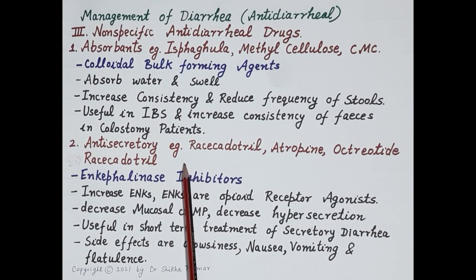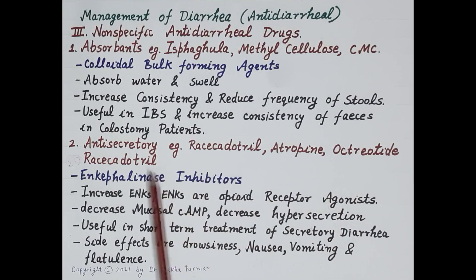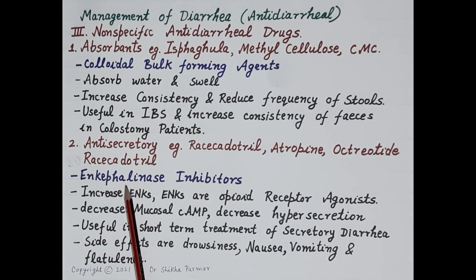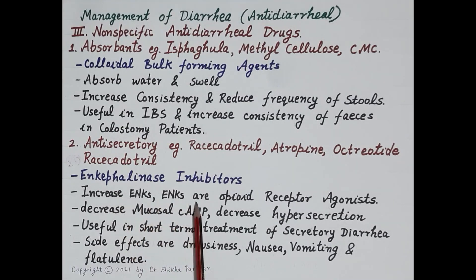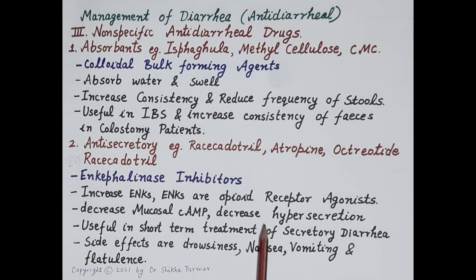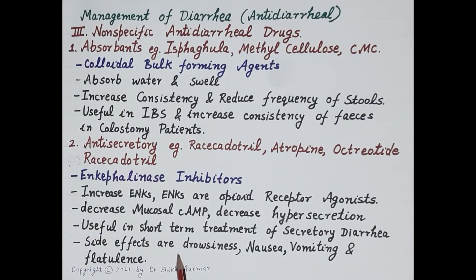Antisecretory drugs include racecadotril, atropine, and octreotide. Racecadotril is an enkephalinase inhibitor — it prevents breakdown of enkephalins, increasing endogenous enkephalin levels. Enkephalins are opioid receptor agonists that decrease intestinal mucosal cyclic AMP, thereby decreasing hypersecretion. Racecadotril is useful in short-term treatment of secretory diarrhea. Side effects include drowsiness, nausea, vomiting, and flatulence.